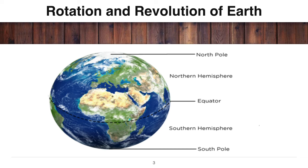The Earth's axis runs from the North Pole to the South Pole — upar se niche, south pole tak. The equator is another imaginary line around the Earth which is at equal distance from both the poles. It divides the Earth into two equal parts: the Northern Hemisphere and the Southern Hemisphere. Jo pole south ki taraf hai usay southern hemisphere kehte hain, aur jo north ki taraf hai usay northern hemisphere.